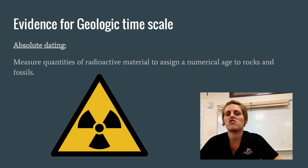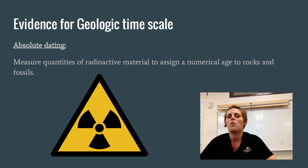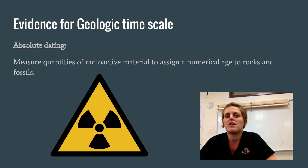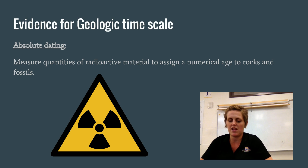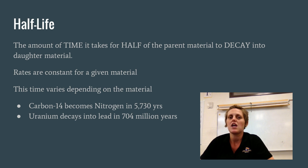Evidence for the geologic time scale includes absolute dating, where we are able to measure quantities of radioactive material to assign a numerical age to rocks and fossils. So we can actually get a number from those things.